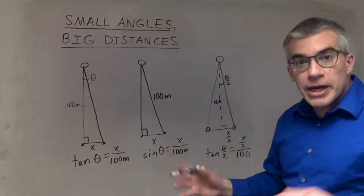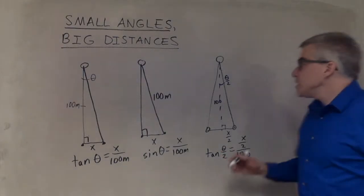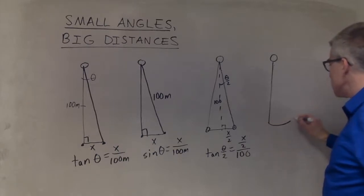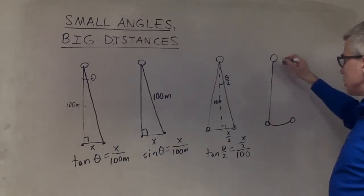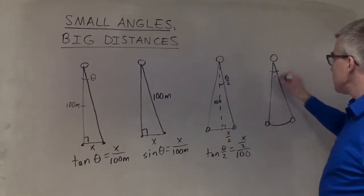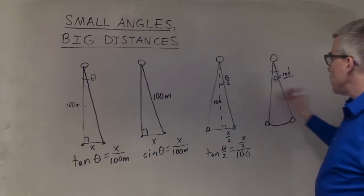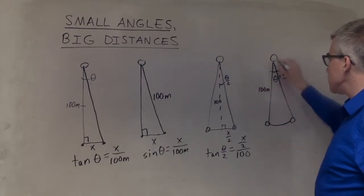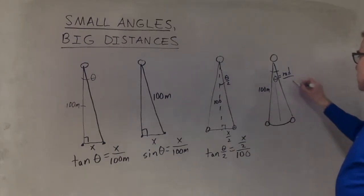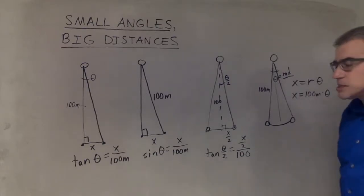Or yet another way, suppose that we decide that this is just an arc. We want to know how long that arc is from there to there. For that one, so long as theta is in radians, we could say this is 100 meters, essentially it's a radius of 100 meters, and say x equals r times theta. So x would be 100 meters times theta in radians.